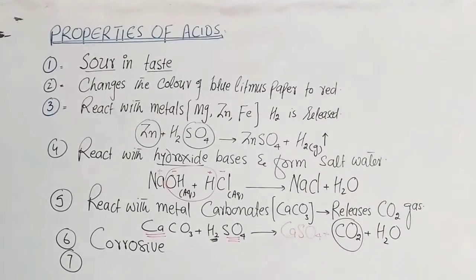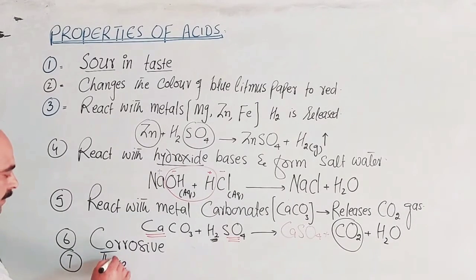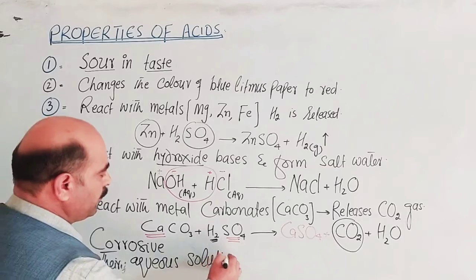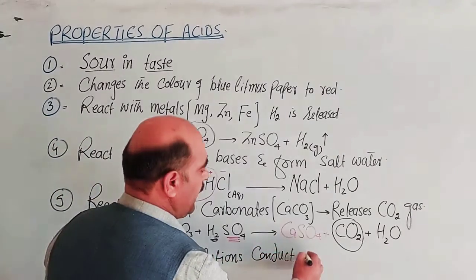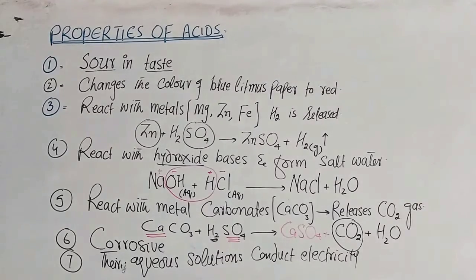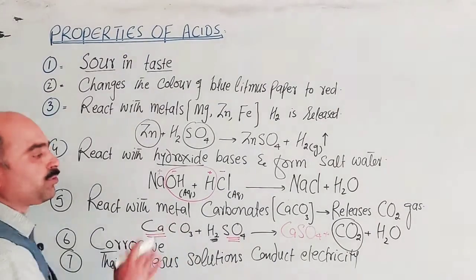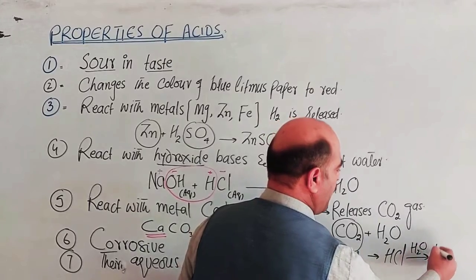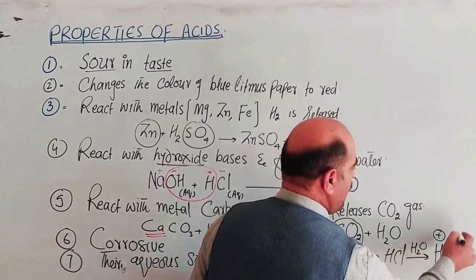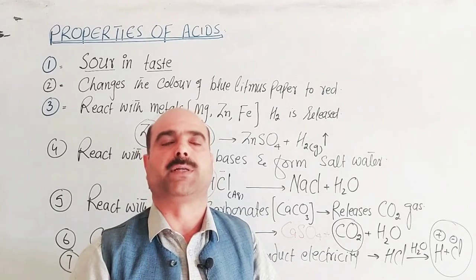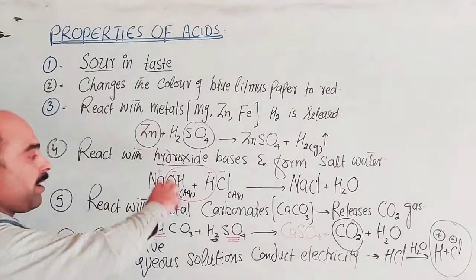The last property of acids is that their aqueous solutions conduct electricity. Acid solutions contain free ions — the movement of ions means movement of charge, which is called electric current. These are the main general properties of all acids.